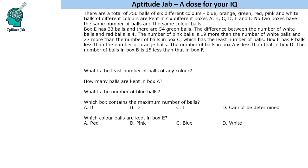This problem states there are a total of 250 balls of 6 different colors, and balls of different colors are kept in different boxes A, B, C, D, E, and F. No two boxes have the same number of balls and the same color balls. This means each box will have different colors, and the number of balls of different colors are also different. Using this information, we need to find out how many balls are of which color and kept in which box.